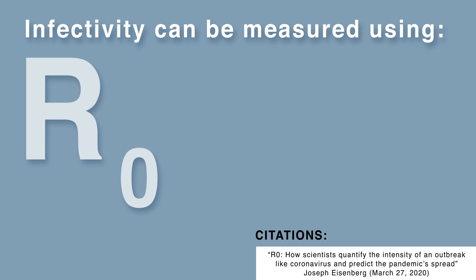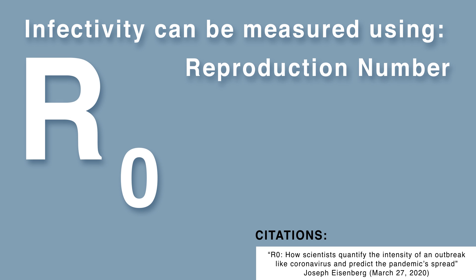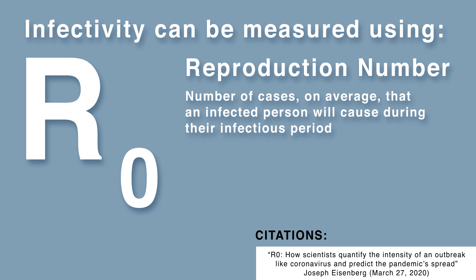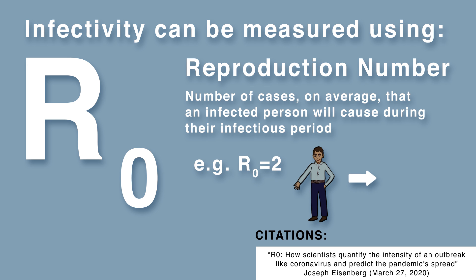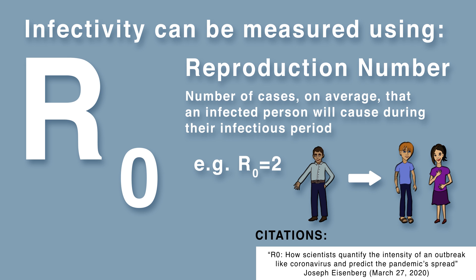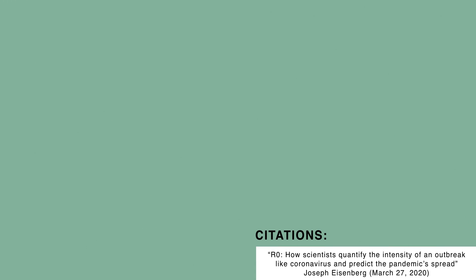Infectivity can be measured using R-naught. R-naught is important epidemiology jargon, short for reproduction number. It is the number of cases, on average, that an infected person will cause during their infectious period. So if R-naught equals 2, then an infected person will infect an average of 2 other people while they are infectious. There are two important variants of the R-naught.